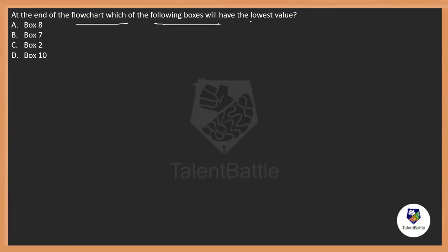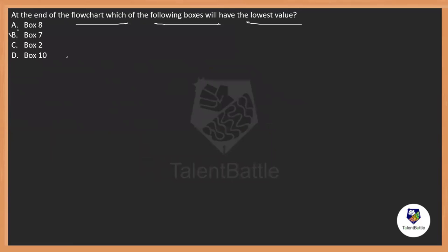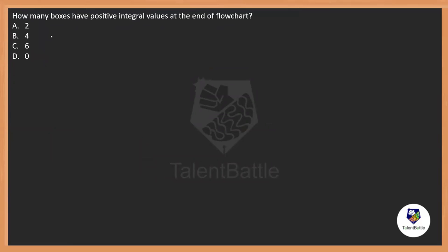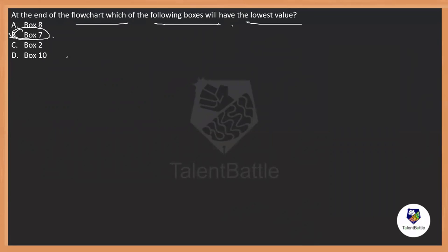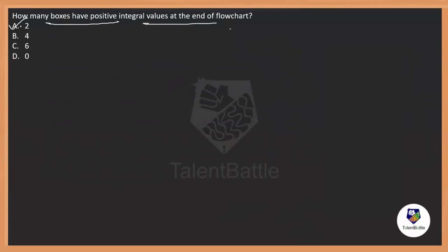Now the questions. Which box has the lowest value at the end of the flowchart? Box[7] = −8, which is the lowest value among all boxes. The answer is box 7 — option B. How many boxes have positive integral values? Box[4] = 2 and box[6] = 4 are positive. Zero is neither positive nor negative. So the answer is two — option A.